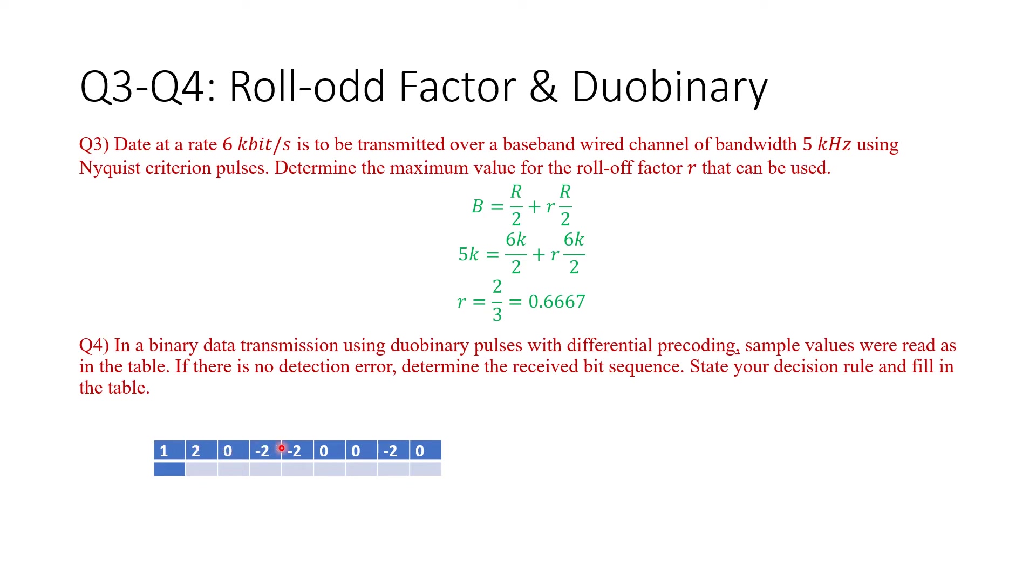So these are the values that we received: 2, 0, -2, -2, 0, 0, -2, 0. And we'd like to fill in the table for the decoded data. You should know how to decode duobinary pulses with differential precoding, state the rule, and fill in the table here. You can pause the video to think about the answer.